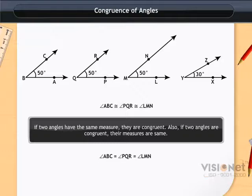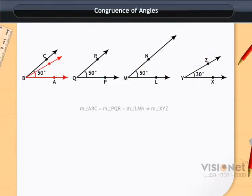The angle XYZ is not congruent to the angles ABC, PQR and LMN, as its measure is not same as the measure of the given angles.